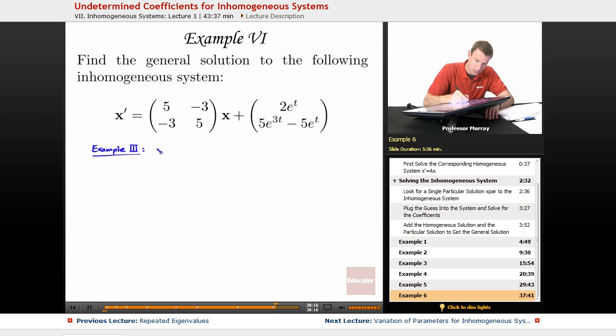And we got x homogeneous was c1 times (1,1) times e to the 2t plus c2 times negative (1,1) times e to the 8t, so that was in example 3. You can go back and watch example 3 to see where that came from.